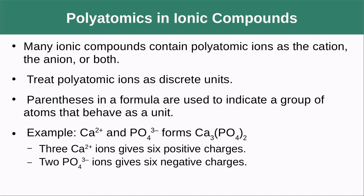Often we work with polyatomic ions rather than monoatomic ions. Polyatomics are treated as discrete units and are typically placed inside parentheses in a formula to indicate they behave as one unit. For calcium phosphate: calcium is +2, so we need three calciums (+6), counterbalanced by two phosphate polyatomics (-6) to get a neutral species — written with parentheses around the phosphates.